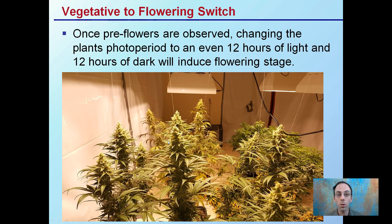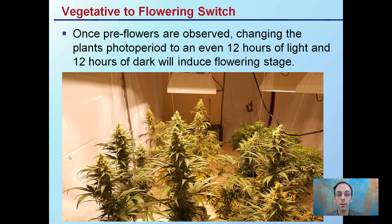Vegetative to flowering switch: once pre-flowers are observed, changing the plant's photoperiod to an even 12 hours of light and 12 hours of dark will induce the flowering stage. If you keep them under there, hopefully they'll continue to grow and expand a little bit during the flowering stage and produce the buds that you desire. Flipping these plants is advised after you start to see the pre-flowers — it's your indication that those plants can make the switch over to the flowering room.